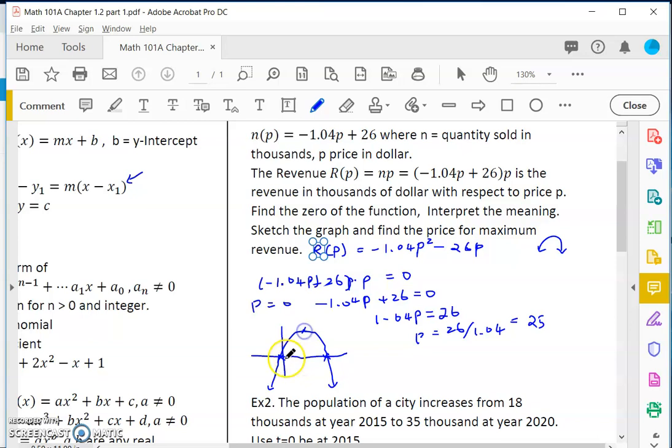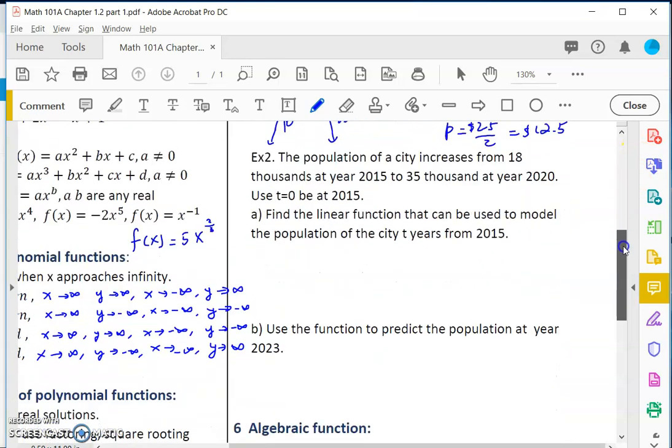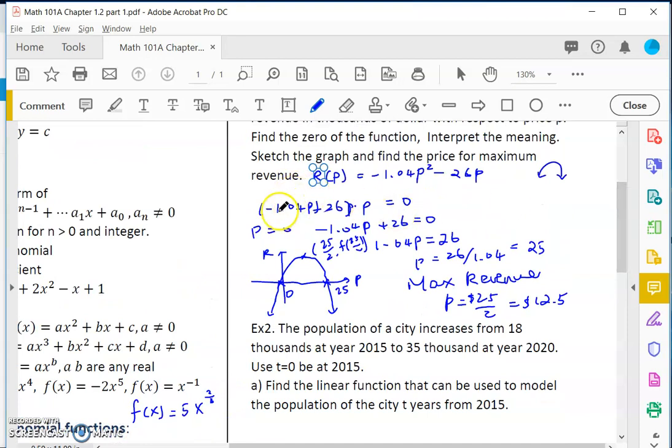If it is a quadratic function, the vertex is always halfway in between the two zeros. In this case, this is p and this is the revenue. The vertex would have a p value of 25 over 2, and f of 25 over 2. So maximum revenue happens at p equals 25 over 2 dollars, that is $12.50. The features of quadratic function allow us to find maximum or minimum value, and the factors allow us to find zeros for graphing.